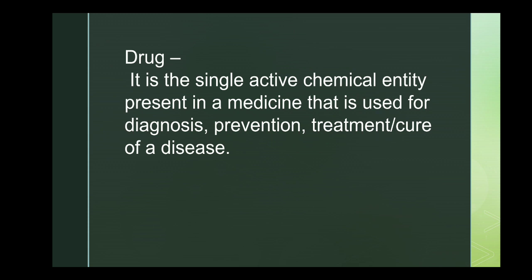The active chemical constituent itself is known as the drug. A drug is used for three main purposes: first, diagnosis — to identify which type of disease has occurred in the patient; second, prevention — to prevent the disease before it harms the body; and third, treatment or cure — to treat the disease condition observed in the patient.